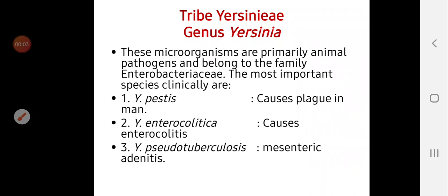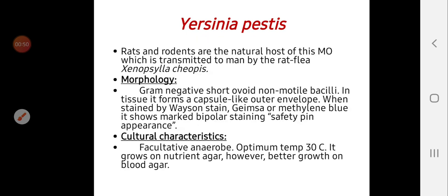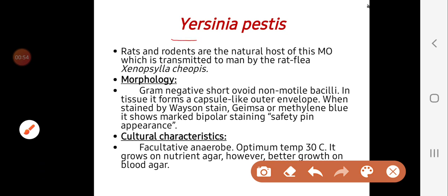The third part of our lecture today is about tribe Yersinia, which is less important than the other primary intestinal pathogens — Salmonella and Shigella. These microorganisms are primary animal pathogens belonging to the family Enterobacteriaceae. The important clinical species include Yersinia pestis, which causes plague; Yersinia enterocolitica, which causes enterocolitis; and Yersinia pseudotuberculosis, which causes mesenteric adenitis. The most important of them is Yersinia pestis.